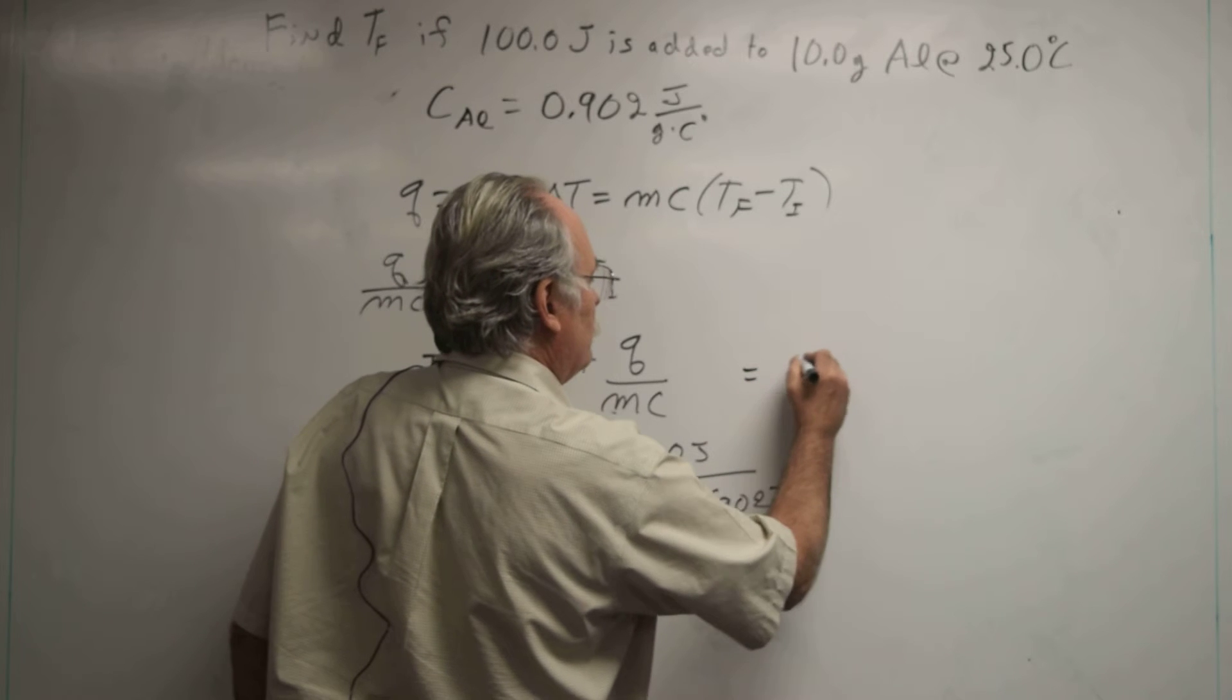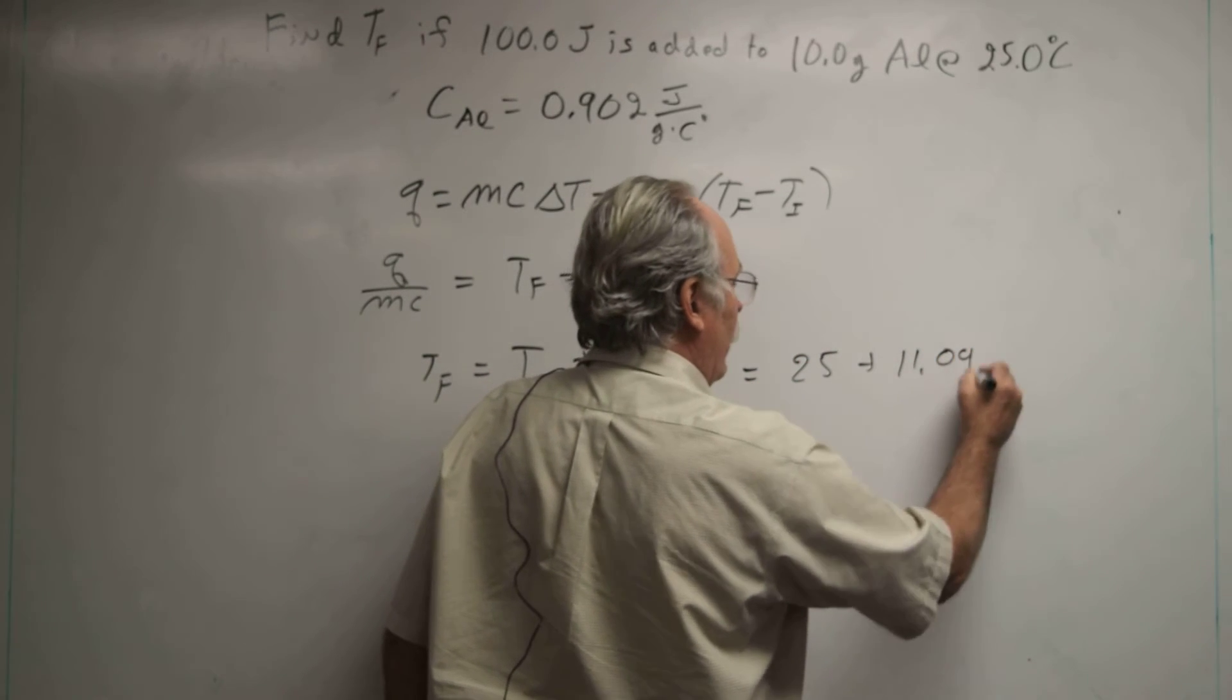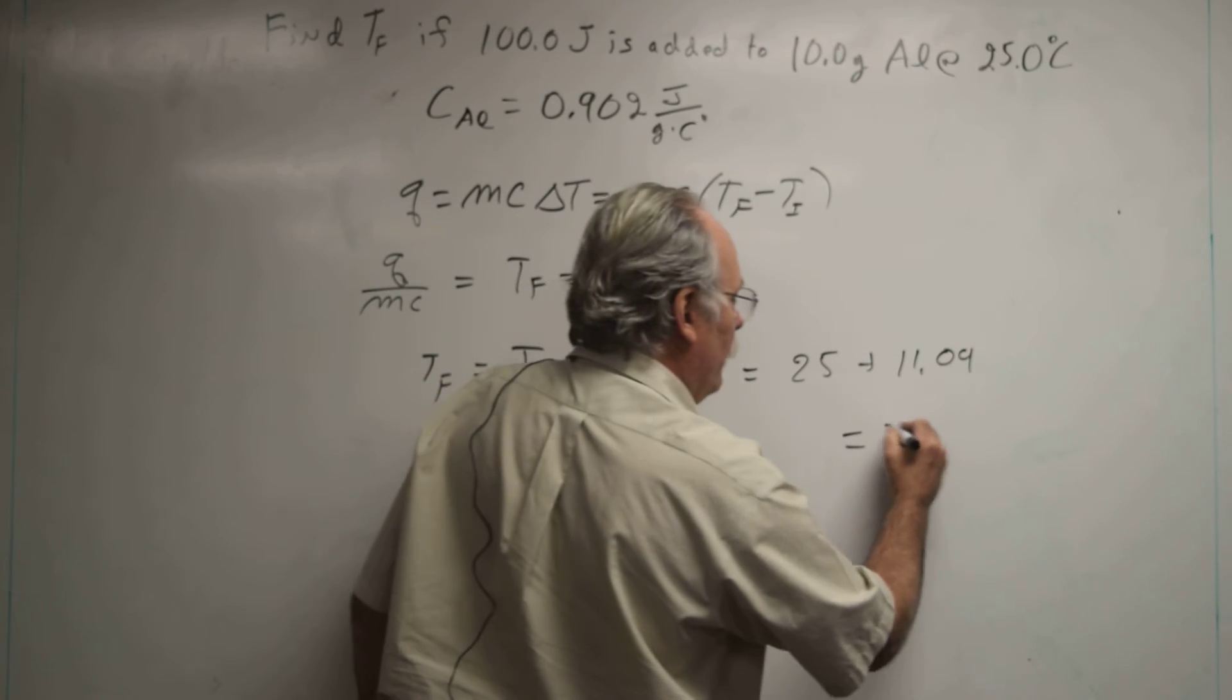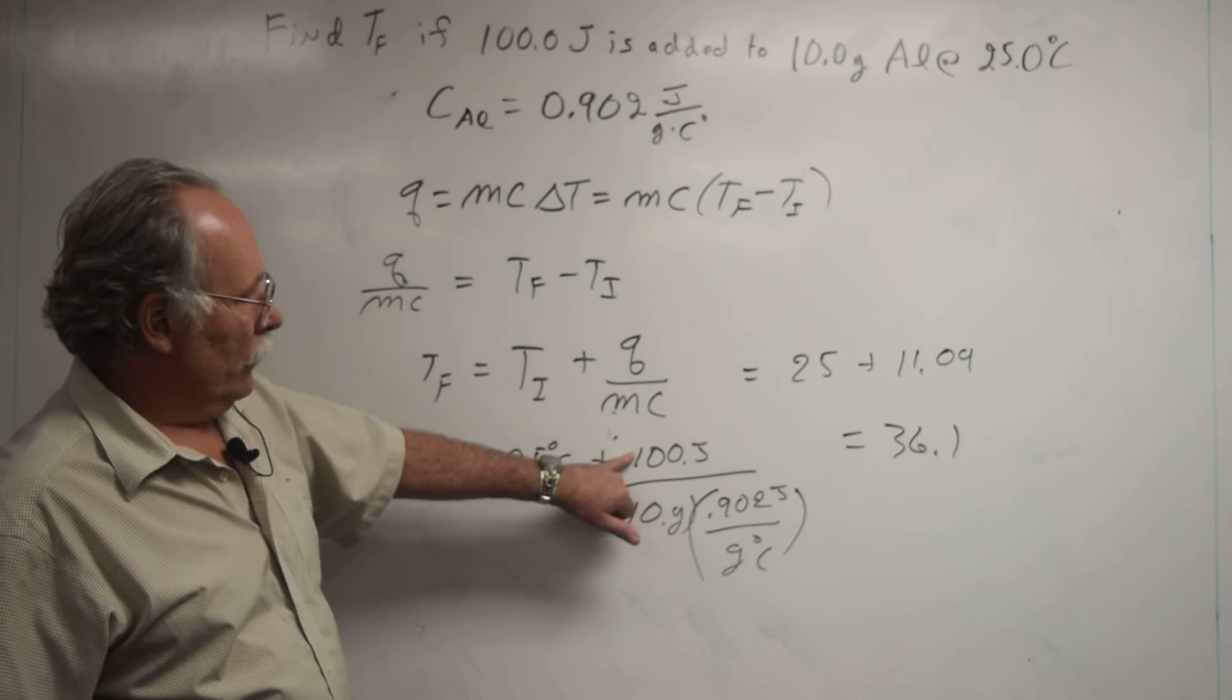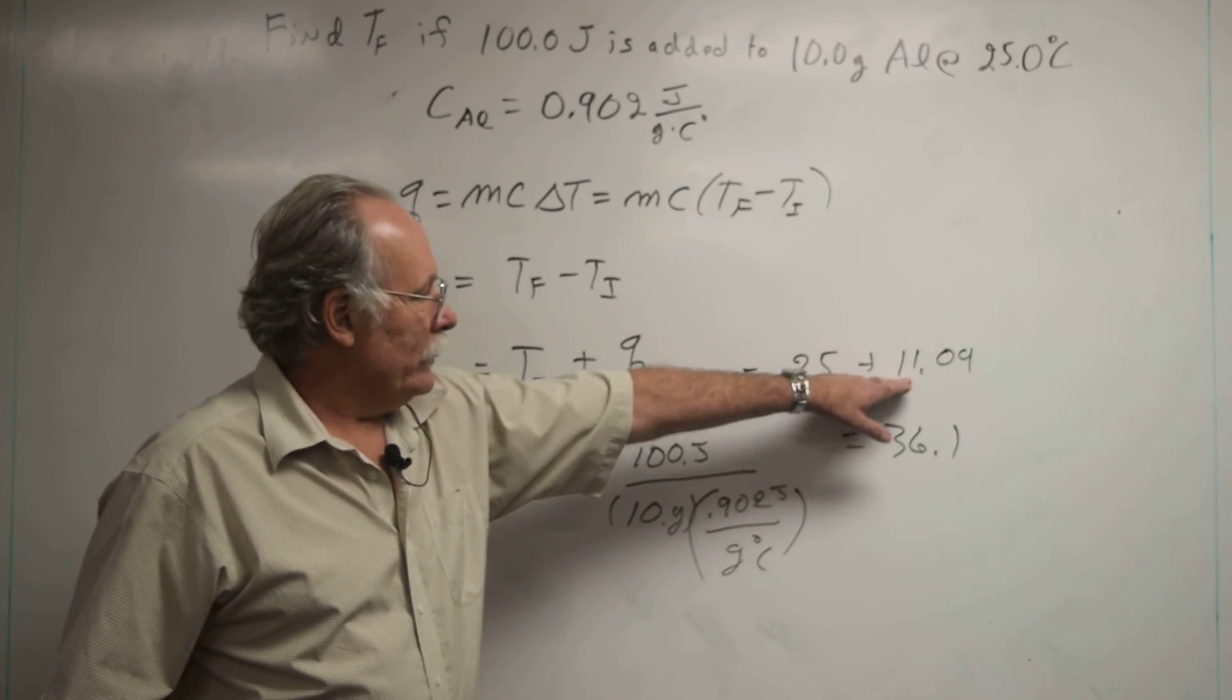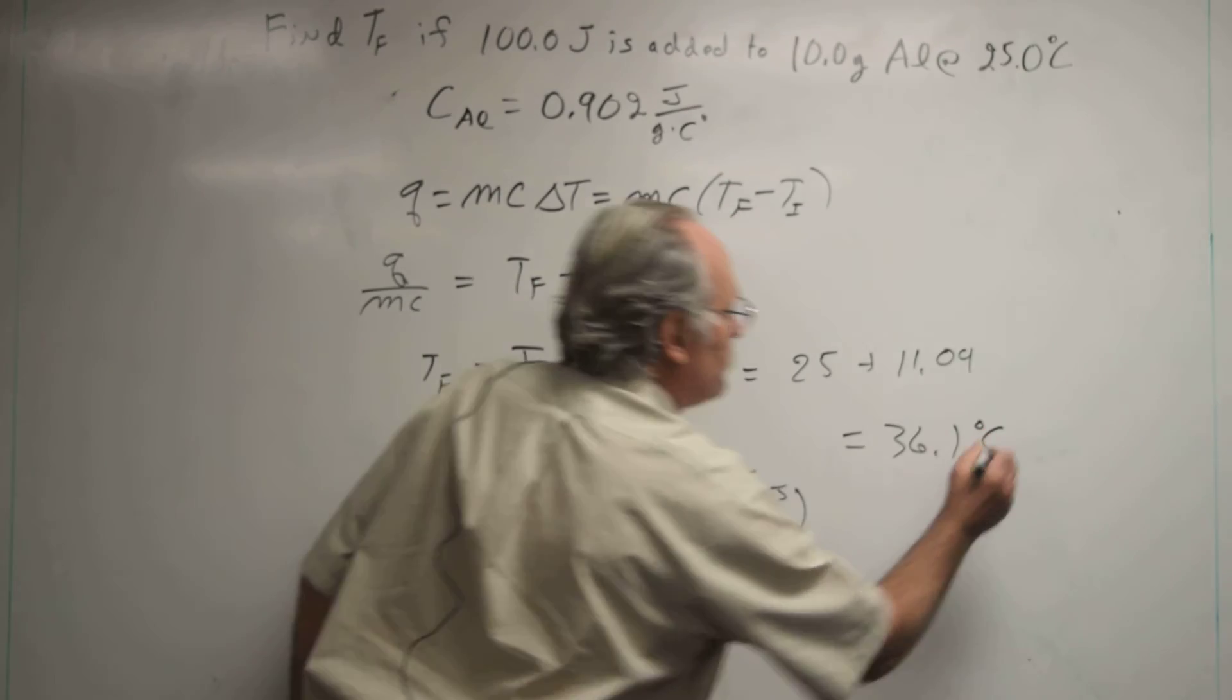This equals 25 plus 11.09, which equals 36.1 degrees C. So adding 100 joules raised the temperature 11.09 degrees, giving a final temperature of 36.1 degrees C.